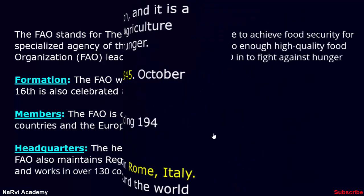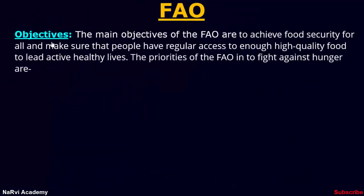The objectives of the Food and Agriculture Organization are to achieve food security for all and make sure that people have regular access to enough high quality food to lead active, healthy lives.